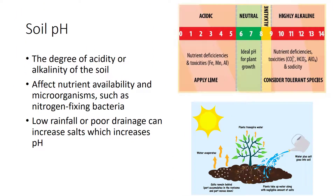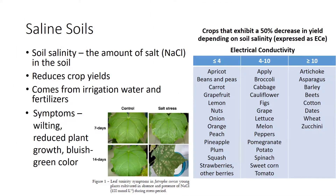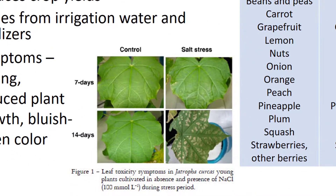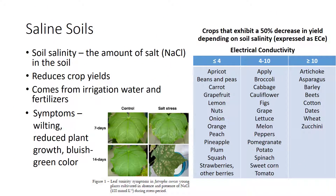Soils exposed to heavy rainfall with good drainage typically have a lower soil pH. Soil salinity is the amount of salt in the soil. Salt stress is a major problem in agriculture because it reduces crop yields. Problems with salt buildup come from irrigation water and fertilizers. Millions of dollars are lost annually as a result of salt stress in plants. Selected examples of crop loss with increased salt, as shown by ECE number—the units of electrical conductivity designated by millisiemens per centimeter at 25 degrees Celsius—are shown in the table. When the salt levels in the soil get too high, plants exhibit similar symptoms to water stress, such as wilting, reduced plant growth, and in some cases the appearance of a green to bluish-green color. Some plants, such as bermudagrass, oleander, and date palm, are salt tolerant and are often selected when planting in landscapes near coastlines.